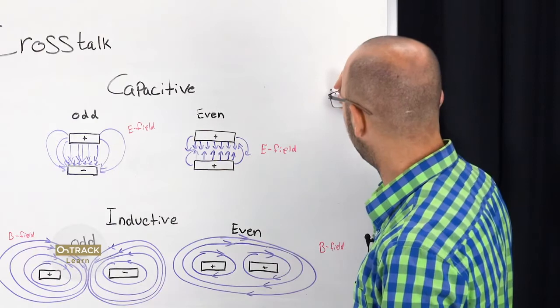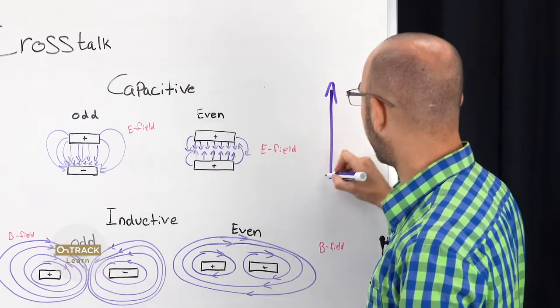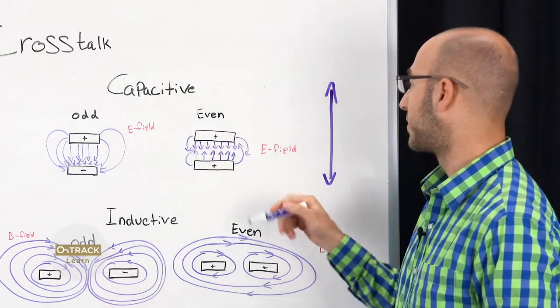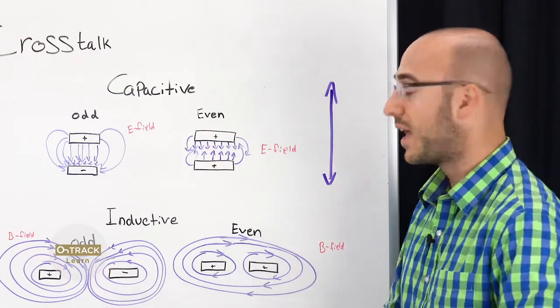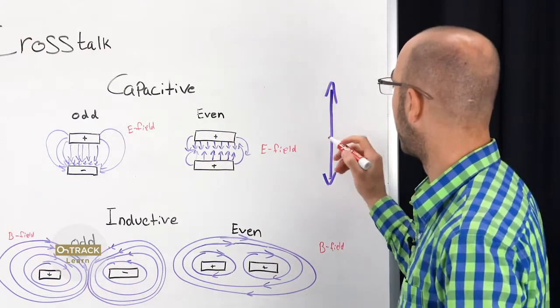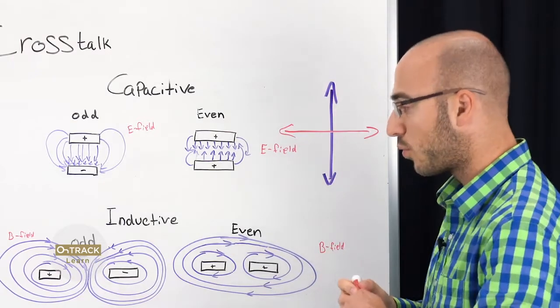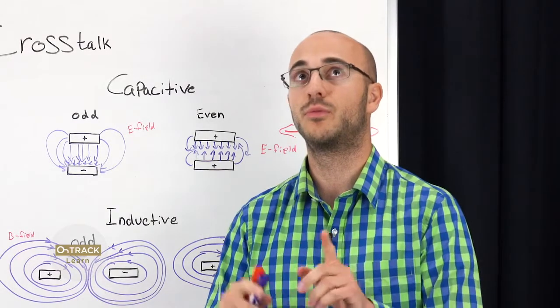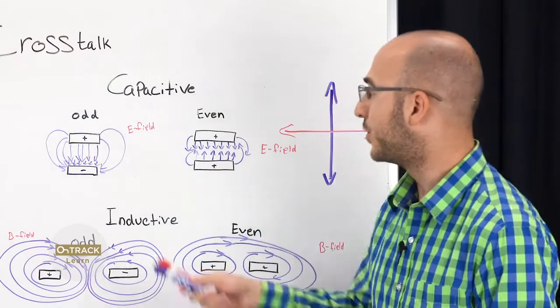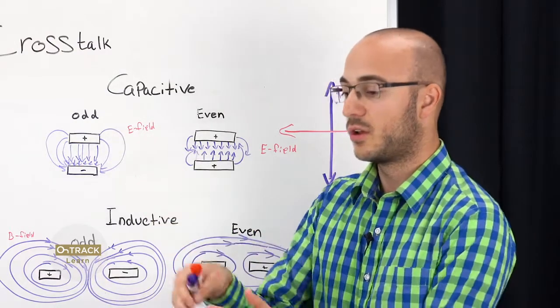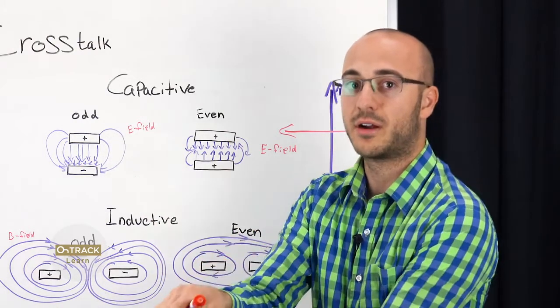So let's say on the top layer, you want to have traces going north-south. And on the adjacent layer, you want to have it going east-west. Because when you really run into trouble is when you have these two traces overlapping, running parallel to each other.